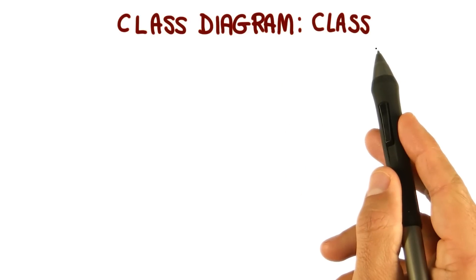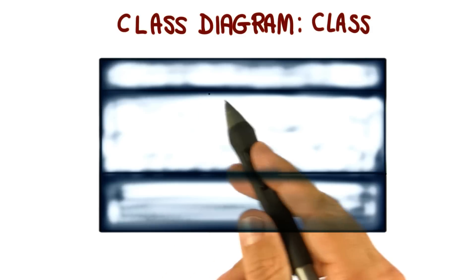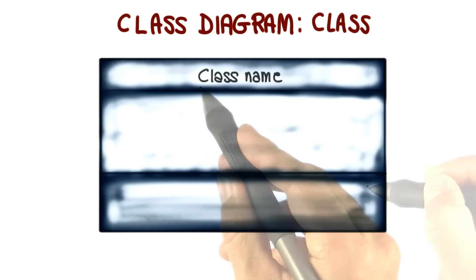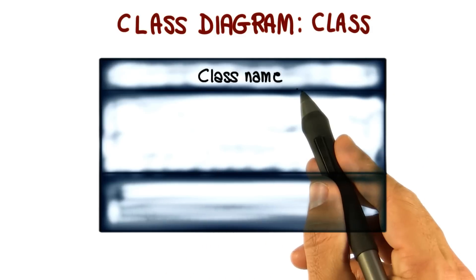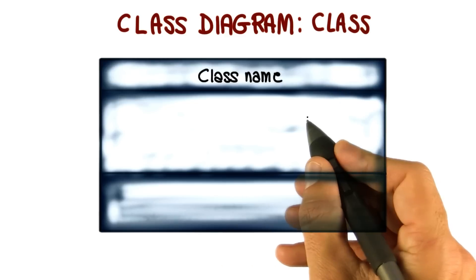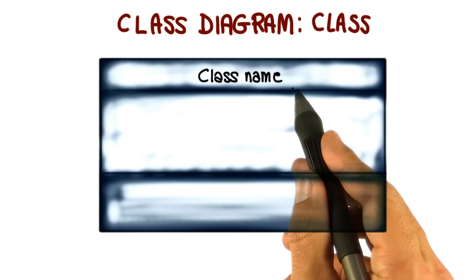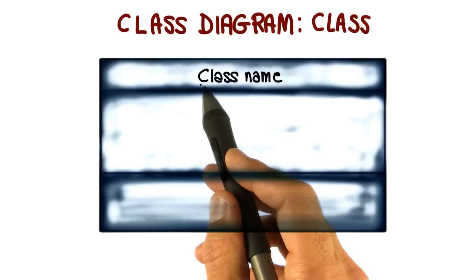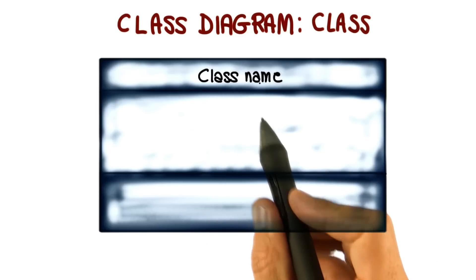How do we represent a class in a class diagram? A class is represented as a rectangle with three parts. The first part is the class name. Classes should be named using the vocabulary of the domain, picking names that make sense. The normal naming standard requires that classes are singular nouns starting with a capital letter.